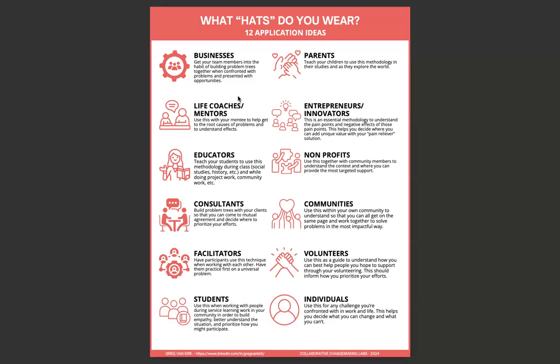For communities — think government, community groups, citizens groups — use this within your own community so that you can all get on the same page and work together to solve problems in the most impactful way. What are the problems we're prioritizing and how do we work on them together? For volunteers, use this as a guide to understand how you can best help the people you hope to support — it should inform how you prioritize your efforts. And just as an individual, use this for any challenge you're confronted with in work and life. This helps you decide what you can change and what you can't, always getting to actionable things.